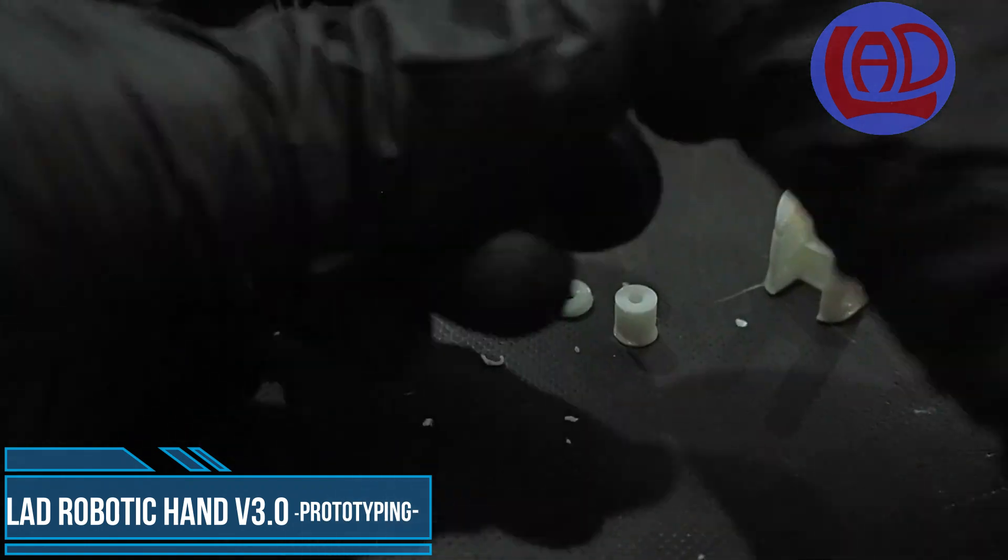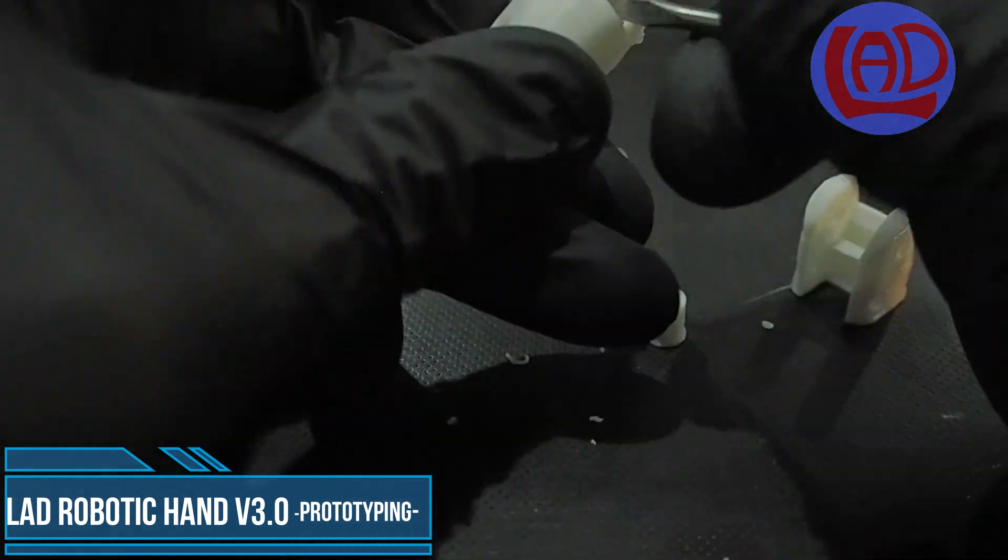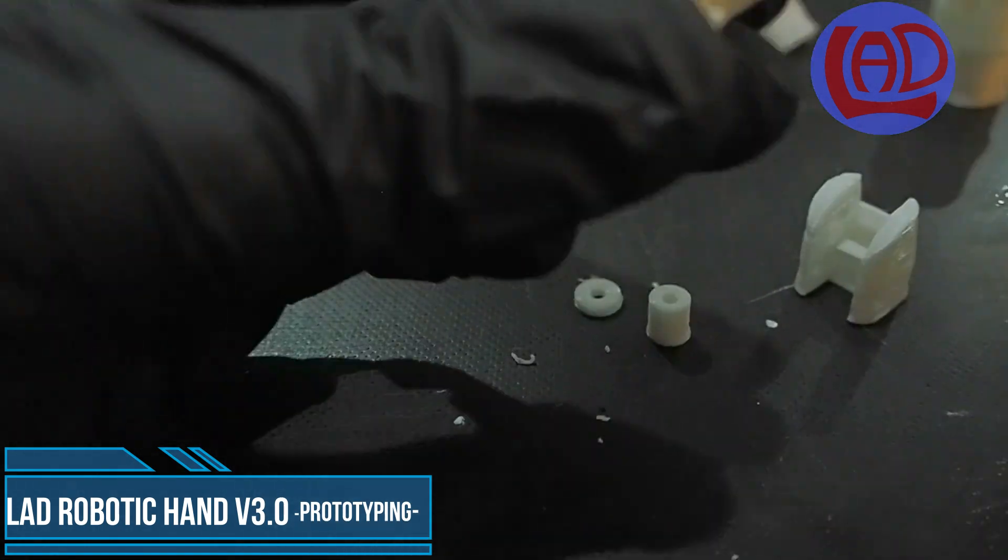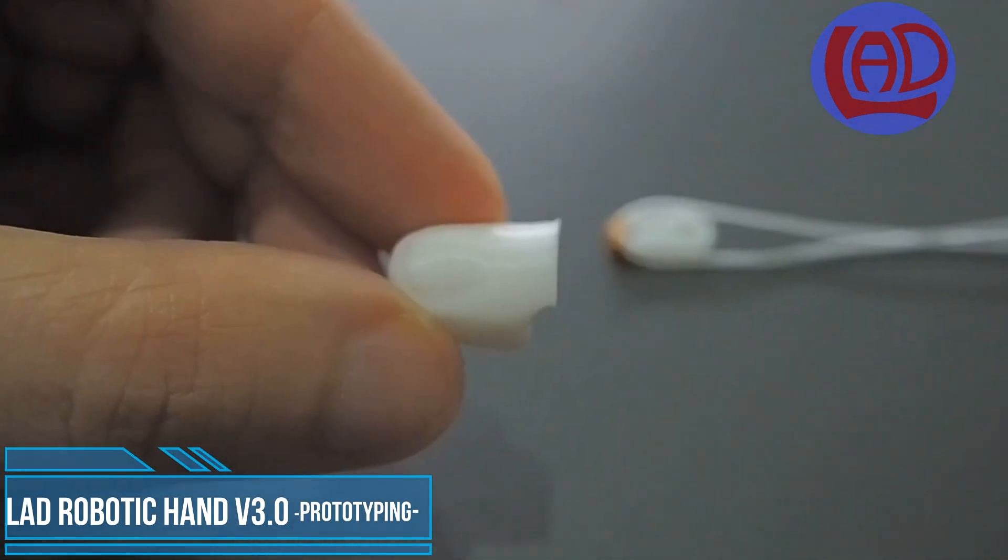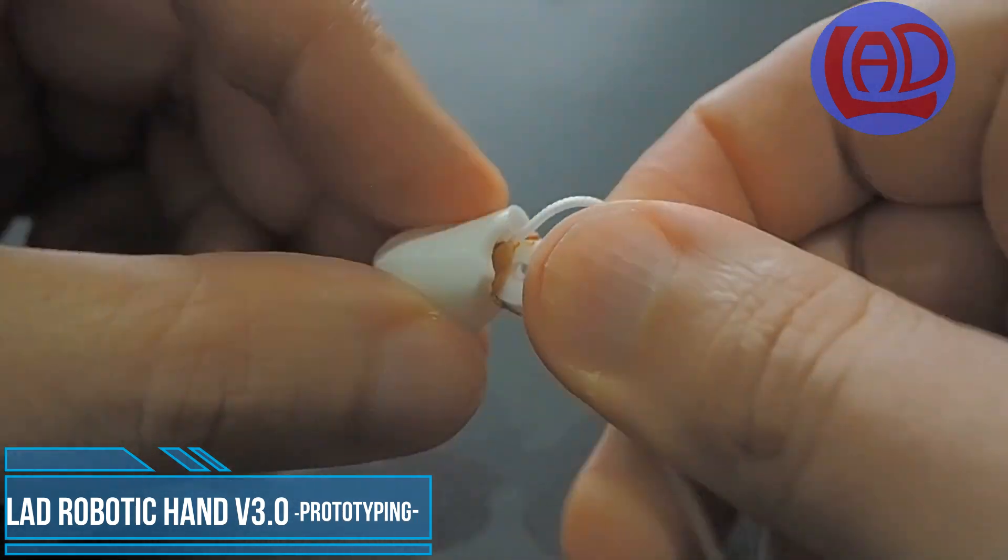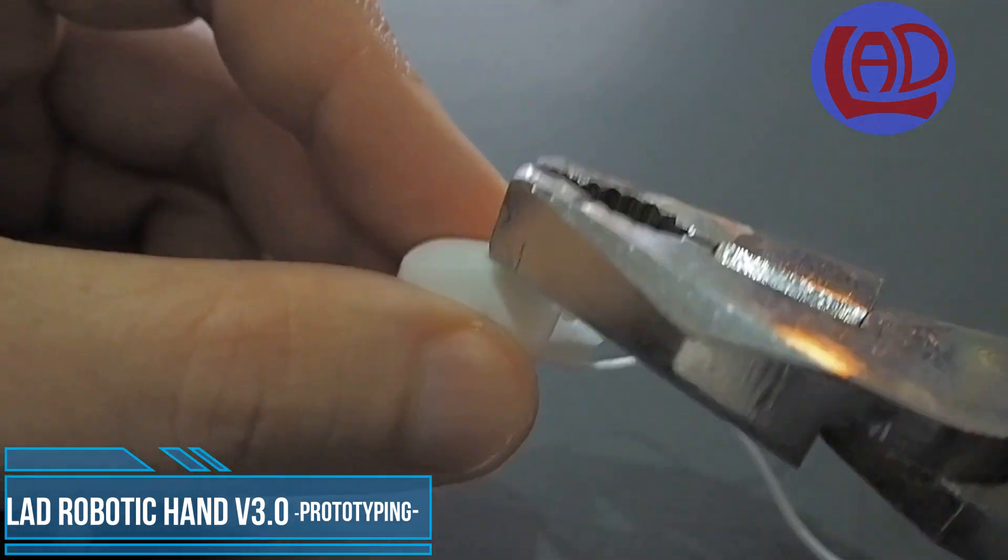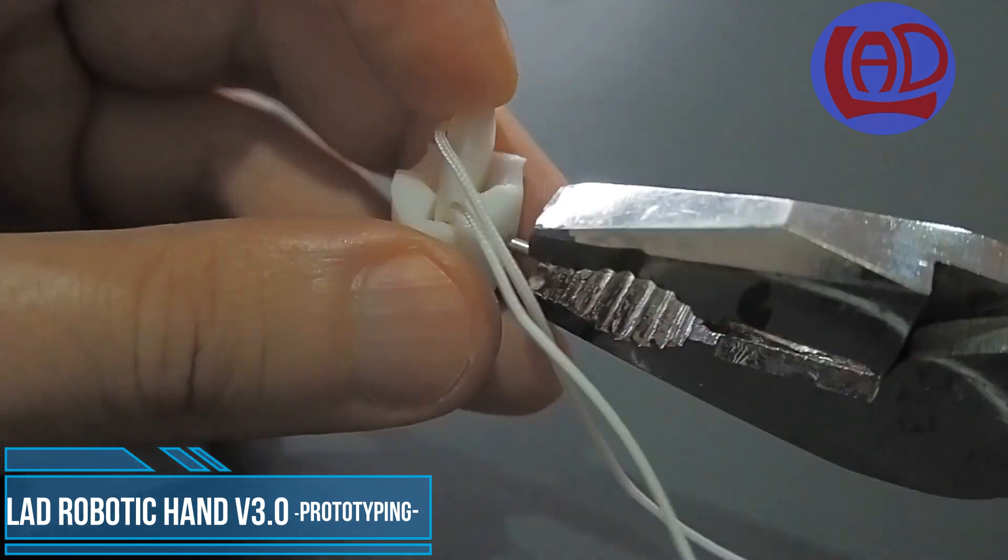For this first prototype I printed the little finger. It is the ideal finger to check if the intended manufacturing technique is suitable and if the tolerances and mechanism are the right ones for this project.